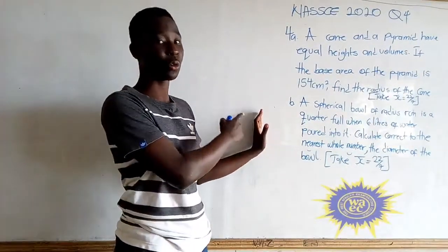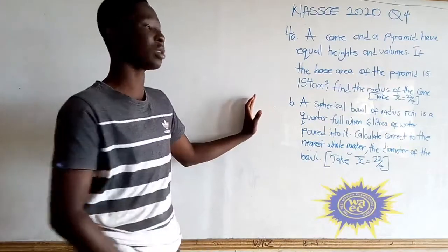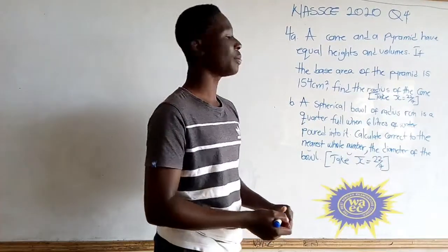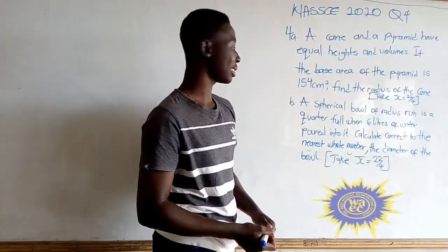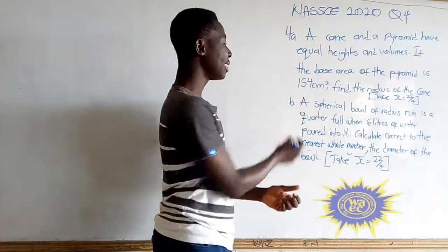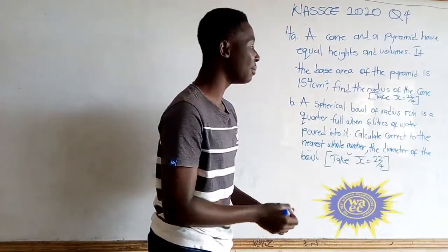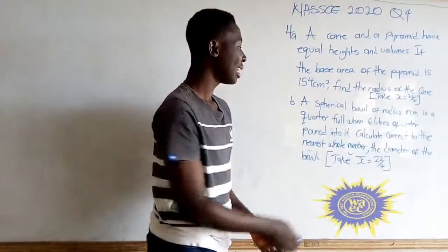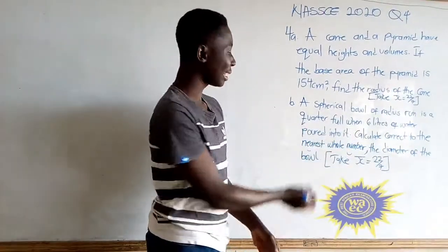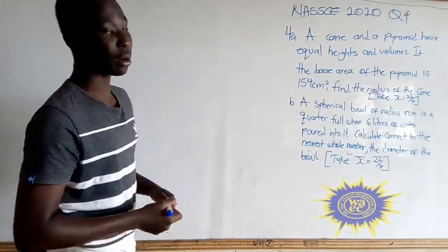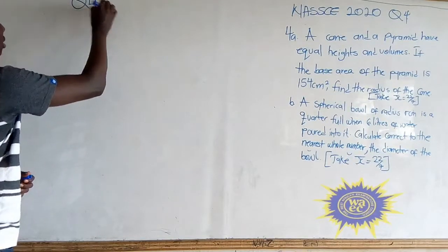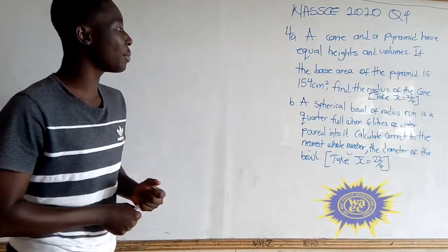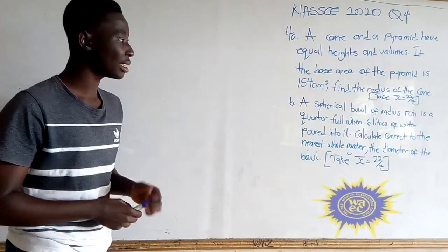This is WASI 2020 question number 4. A cone and a pyramid have equal heights and volumes. If the base area of the pyramid is 154 cm squared, find the radius of the cone. And part b: a spherical bowl of radius r cm is quarter full when six liters of water is poured into it. Calculate, correct to the nearest whole number, the diameter of the bowl.